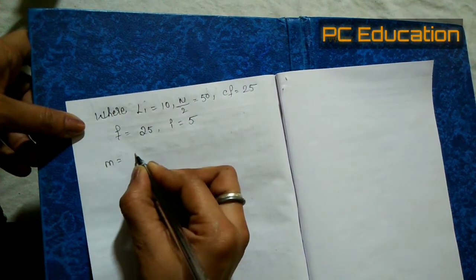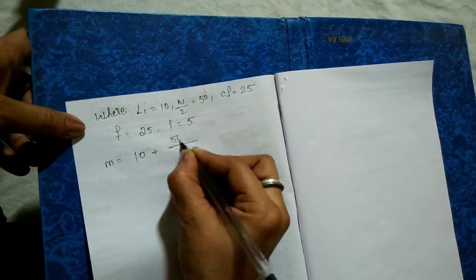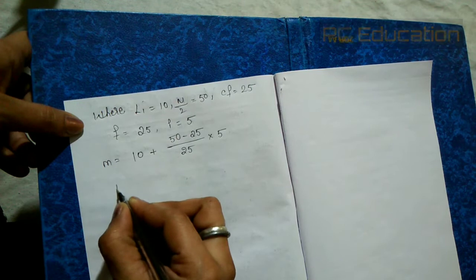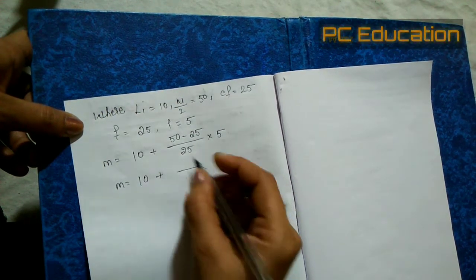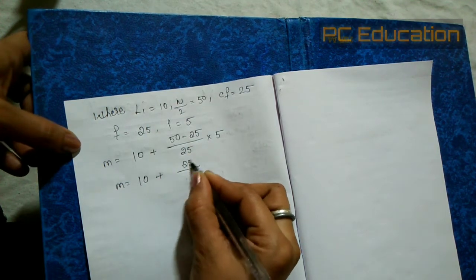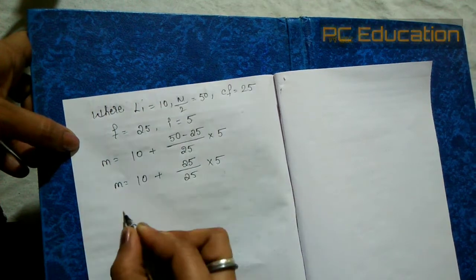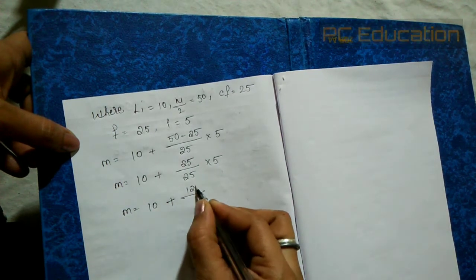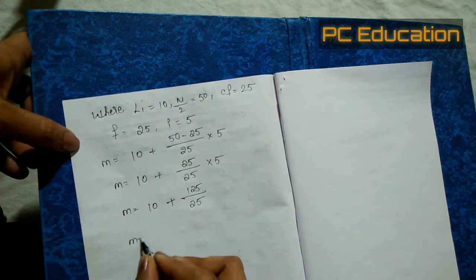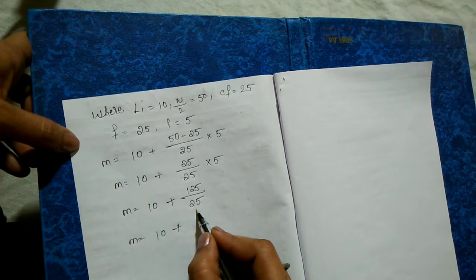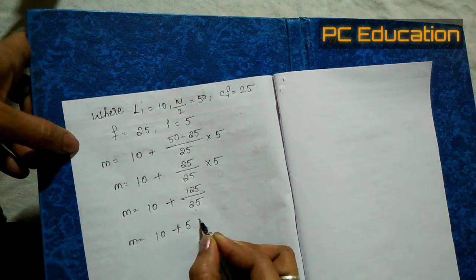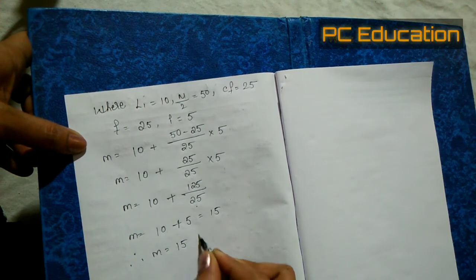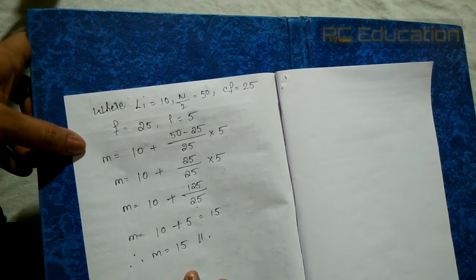Median = 10 + (50 − 25) / 25 × 5. So median = 10 + 25/25 × 5 = 10 + 1 × 5 = 10 + 5. Therefore, median equals 15. This is the way to calculate the median for a continuous series. Thank you.